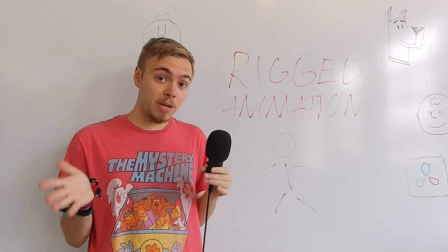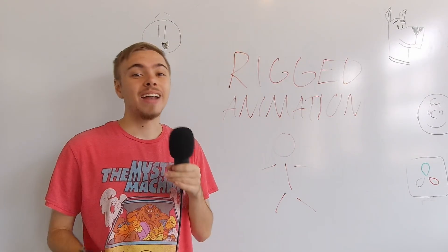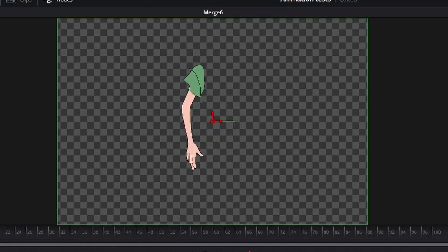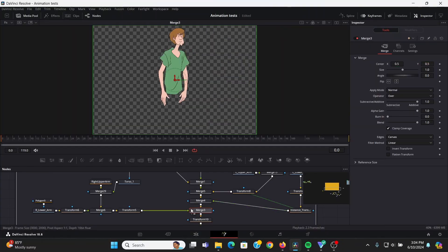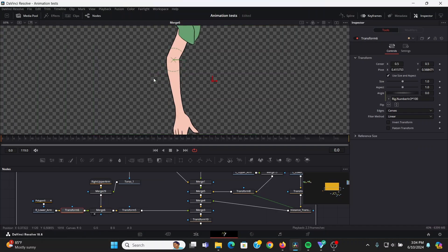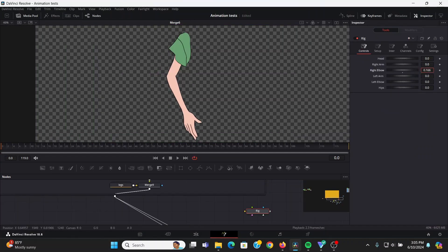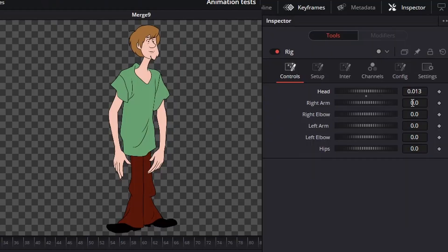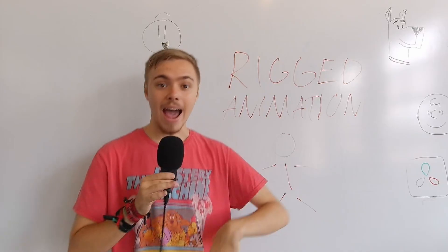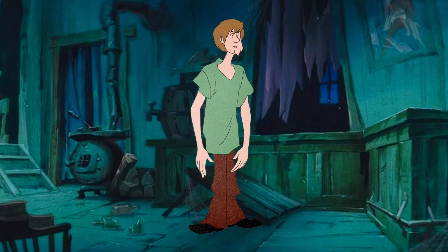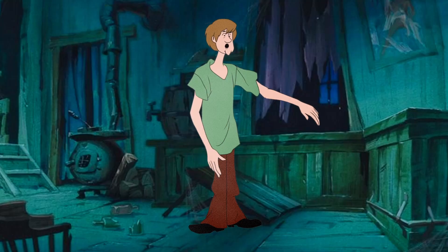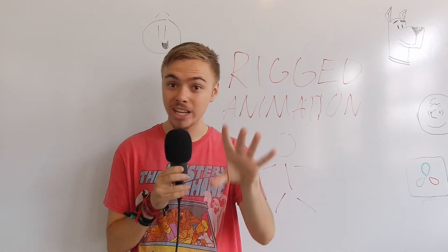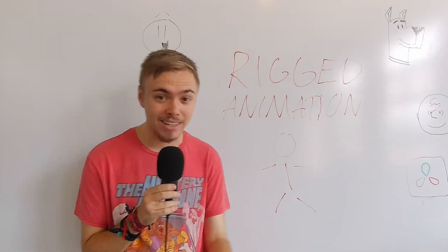As you can probably tell, I'm a pretty big Scooby-Doo fan. So just for fun, I found a picture of Shaggy online and separated it into its individual parts using masks. Then I merged them all together. Then I added transform nodes with pivots at the joints so that I could move them all. I connected all the controls to a custom node so that I could have all the controls in one place. I added some keyframes and got this! Is it janky? Yes, but it proved that you could do rigged animation in DaVinci Resolve, and that was all I needed.